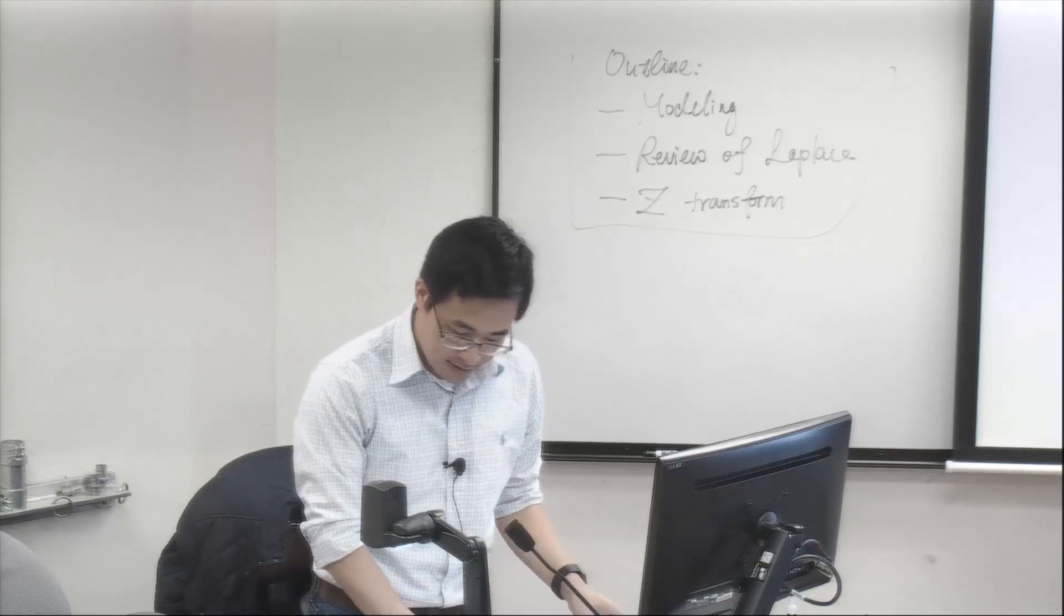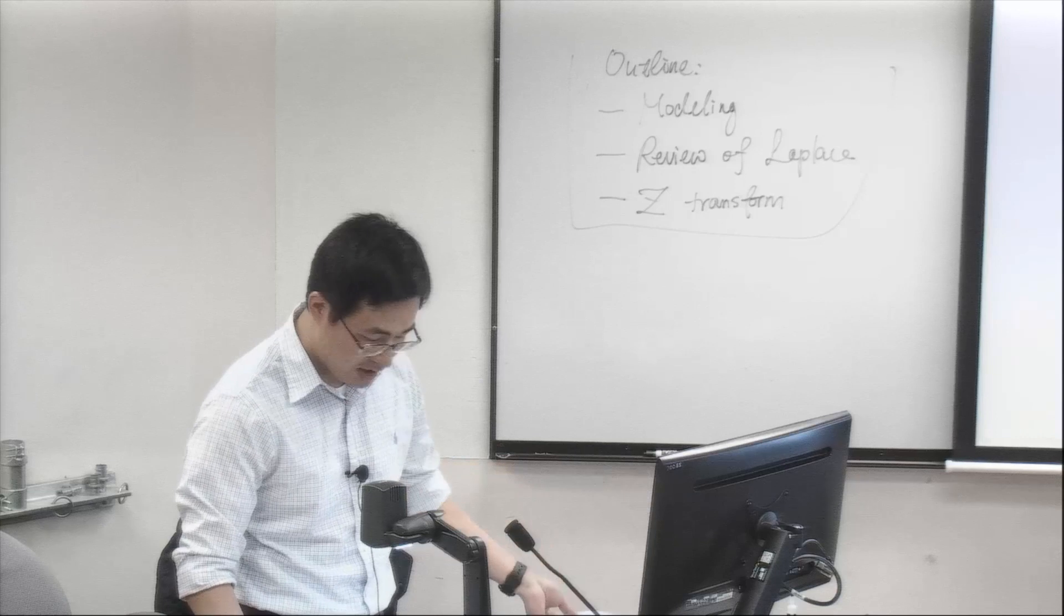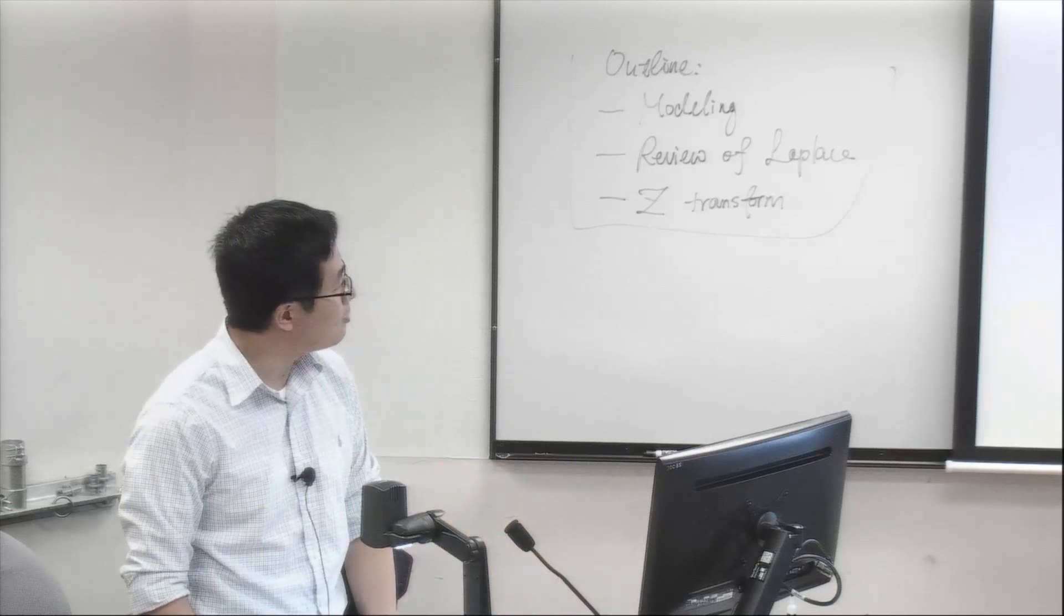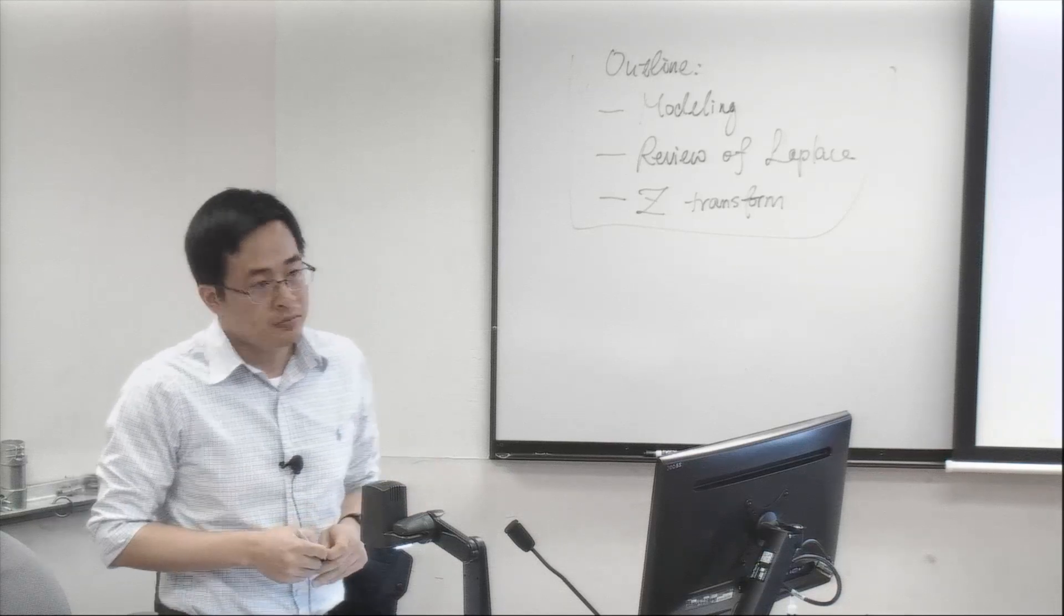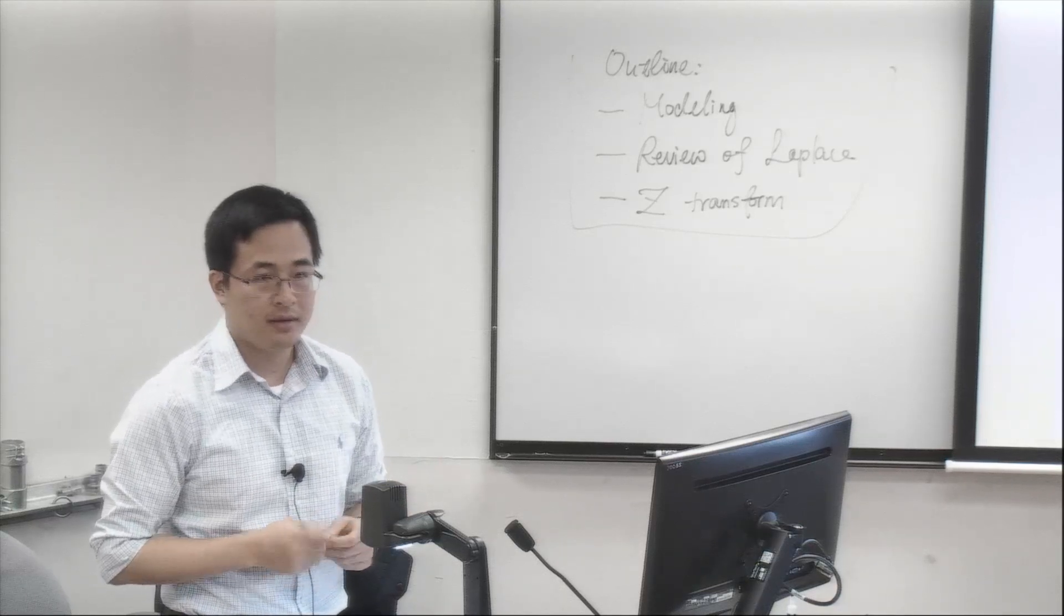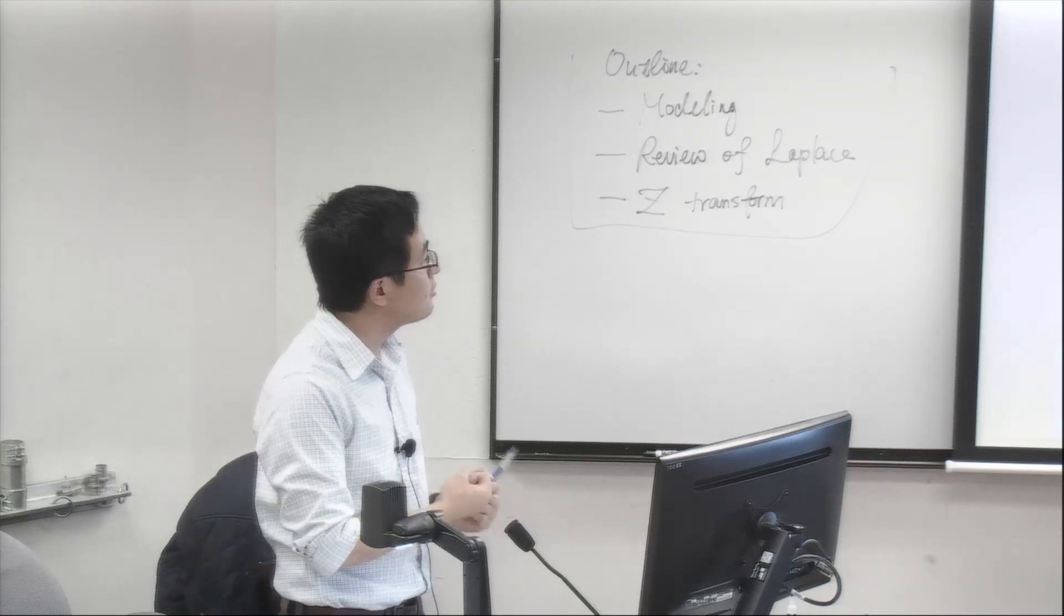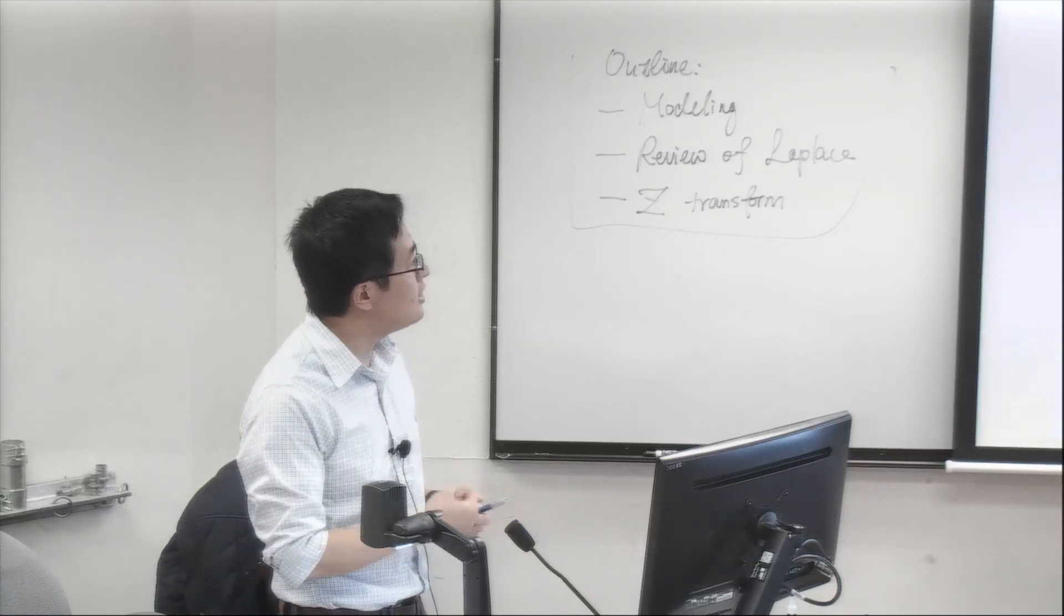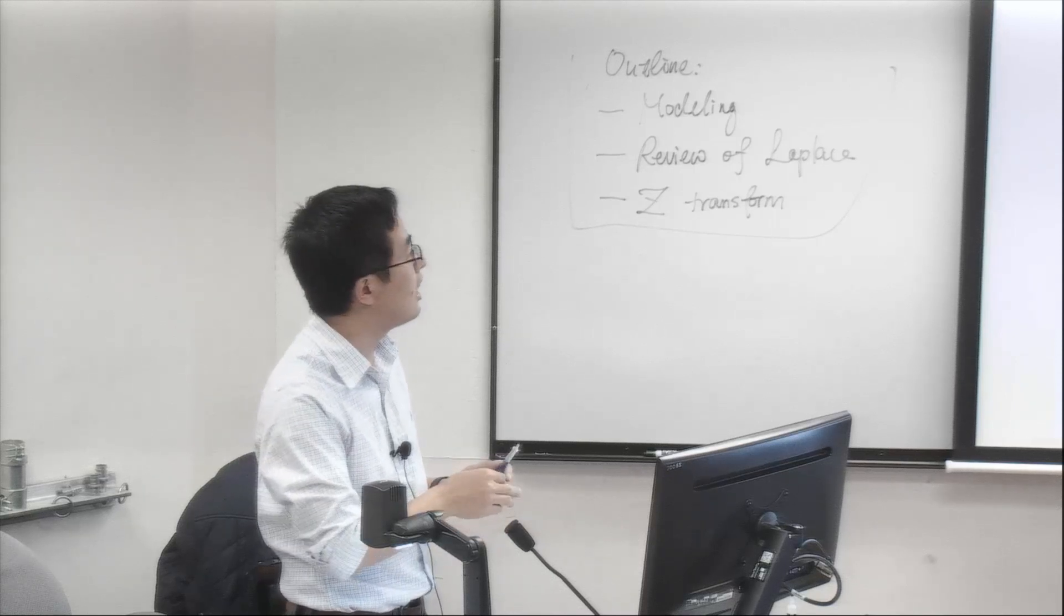Now let's do a recap of what we did last time. So we're talking about properties of models. We're saying that good properties in the model will give tremendous benefit in terms of analyzing and controlling it. Linear systems satisfy the superposition property. Linear combination of the input corresponds to linear combination of the output.